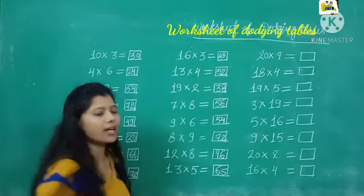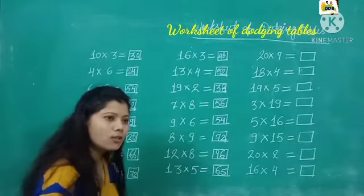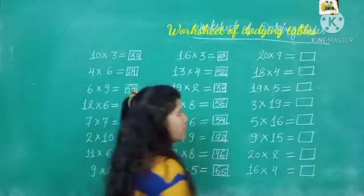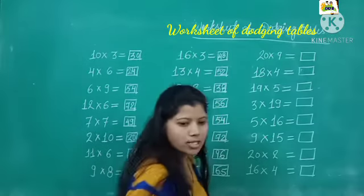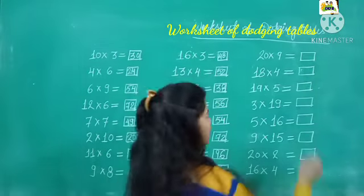Acha, 5 thirteens are kya hai, kya likha hai. To answer kya hoga? Answer is also 65. Next is 20 nines are. What is 20 nines are? 180.